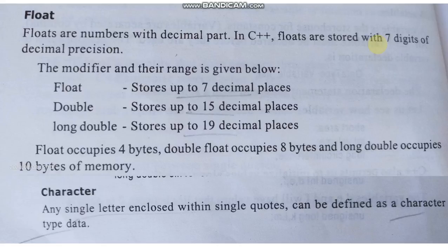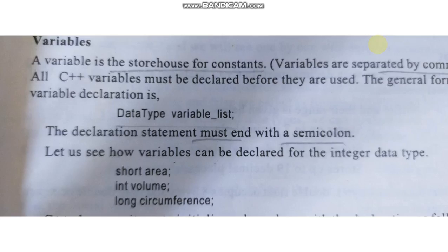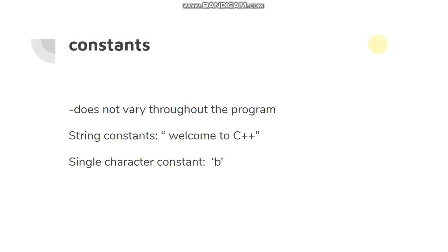And about the character. Any single letter enclosed within the single quote is identified as character. That we already discussed, that is string character constant and a single character constant. String constant is the group of characters. We call it a string, that is enclosed within the double quotes.